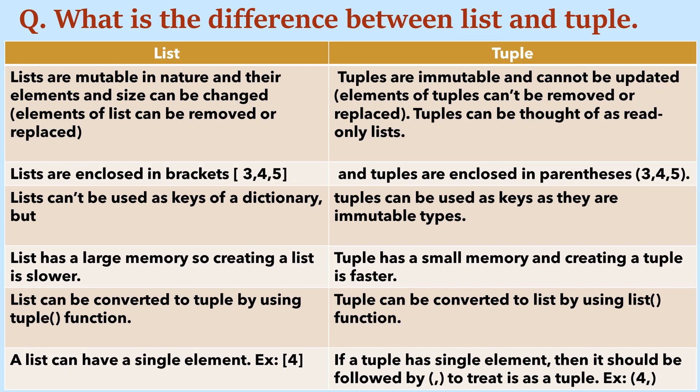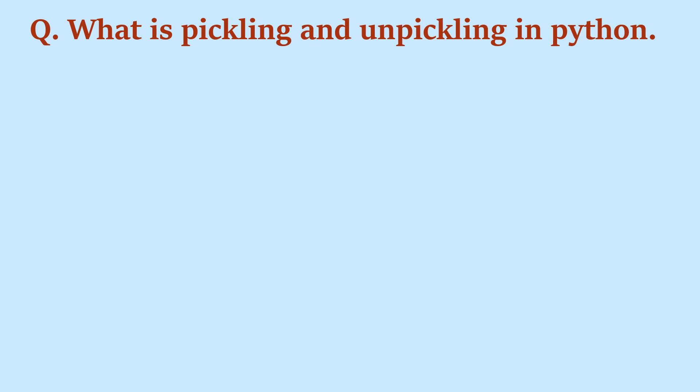Lists occupy more memory and list creation is slower compared to tuple creation, which occupies less memory and is created faster. A list can be converted into a tuple using the tuple() function, and a tuple can be converted into a list using the list() function. One more difference: a single-element list just uses square brackets, but a single-element tuple must have a trailing comma inside the parentheses so that Python treats it as a tuple.